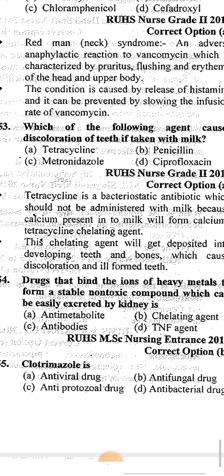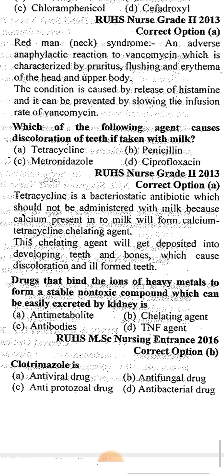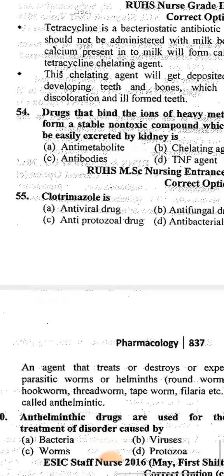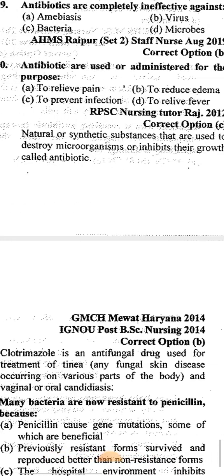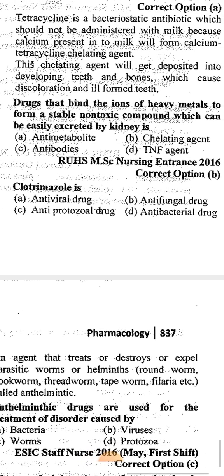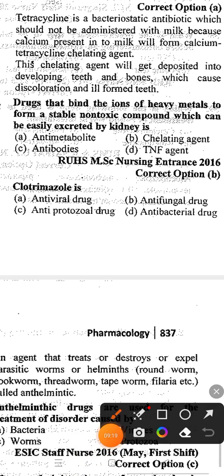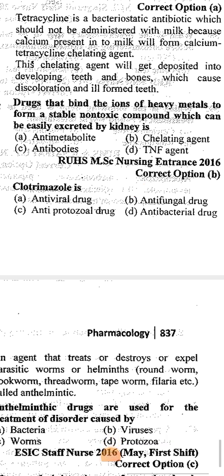The next question: clotrimazole is — Option A: antiviral drug, Option B: antifungal drug, Option C: antiprotozoal drug, Option D: antibacterial drug. The correct answer is option B, antifungal drug.